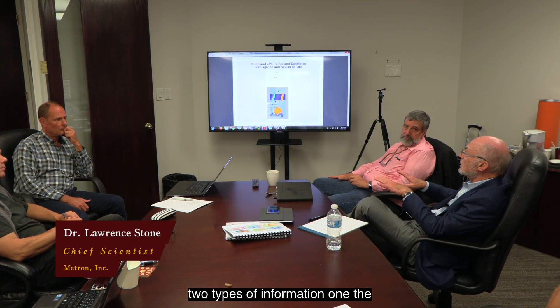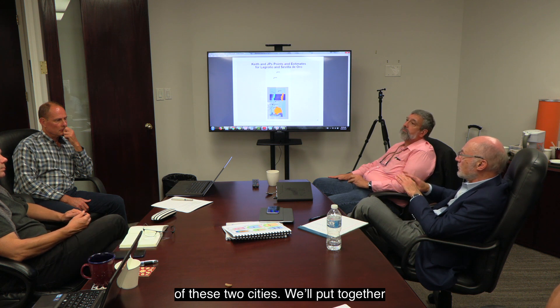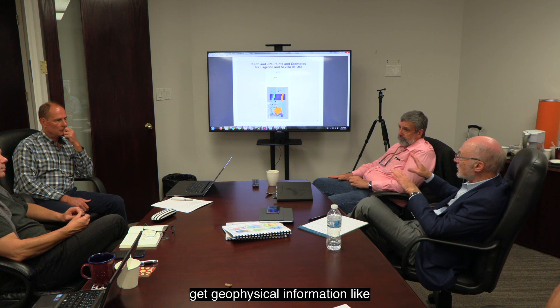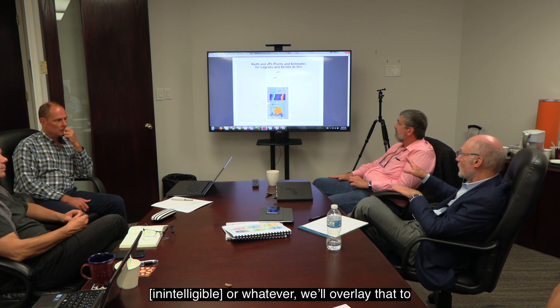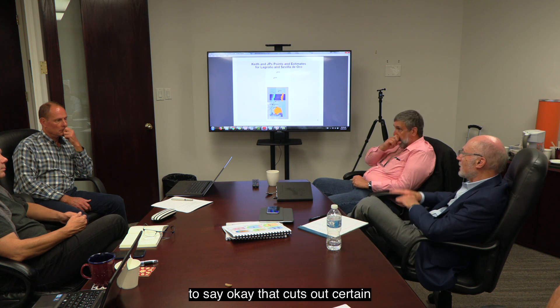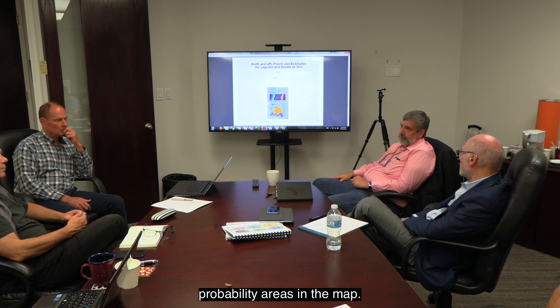I would like to distinguish two types of information here. One, the historical information for the location of these two cities. We'll put together probability maps for that. Then when you get geophysical information like lack of gold or whatever, we'll overlay that to say that cuts out certain probability areas in the map.